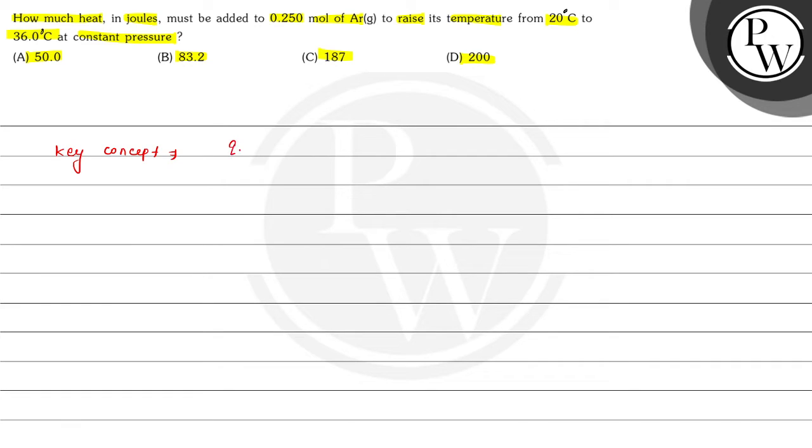So heat is equal to n Cp ΔT. Here Q represents heat, n is equal to number of moles, Cp is equal to heat capacity,